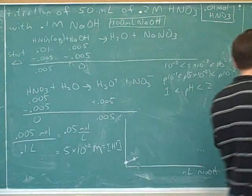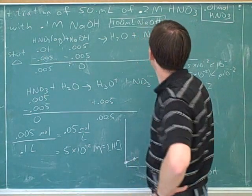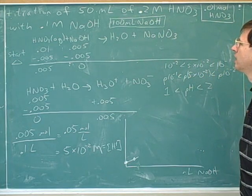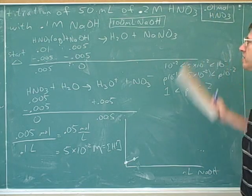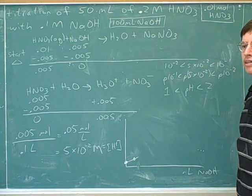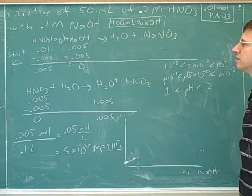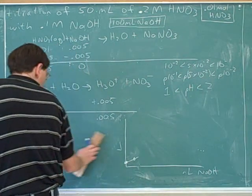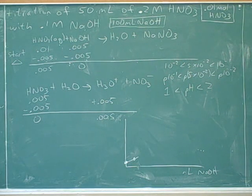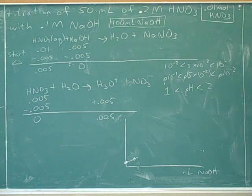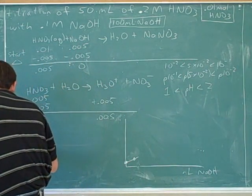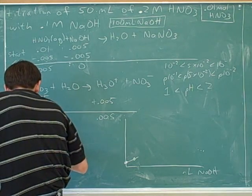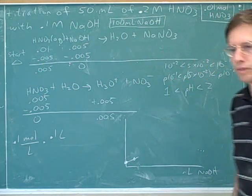I think you might have taken a wrong turn there. How much nitric acid are we starting with? 0.01 moles — that hasn't changed. And how much sodium hydroxide are we starting with now? 100 milliliters is 0.1 liters, so 0.1 moles per liter times 0.1 liters. So 0.1 times 0.1 is 0.01.